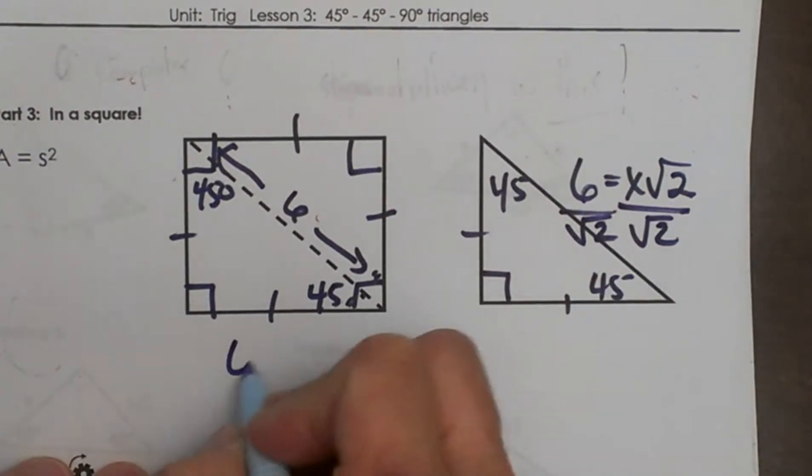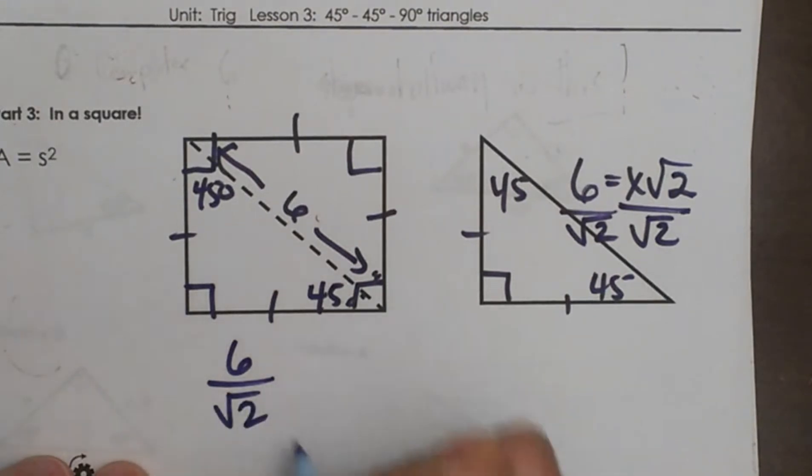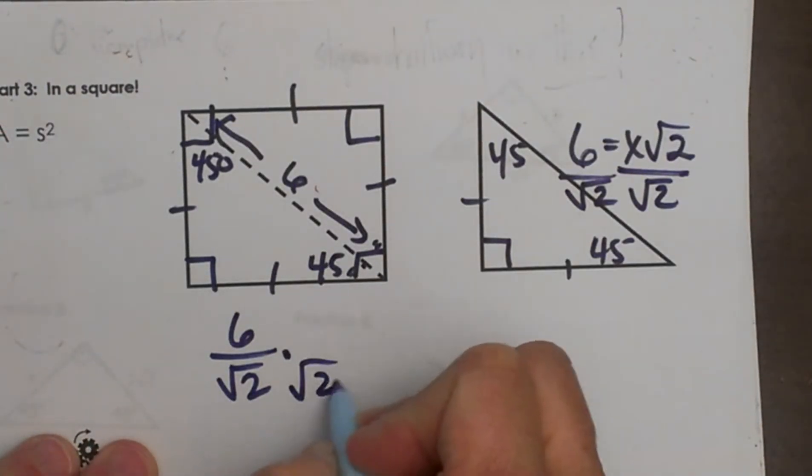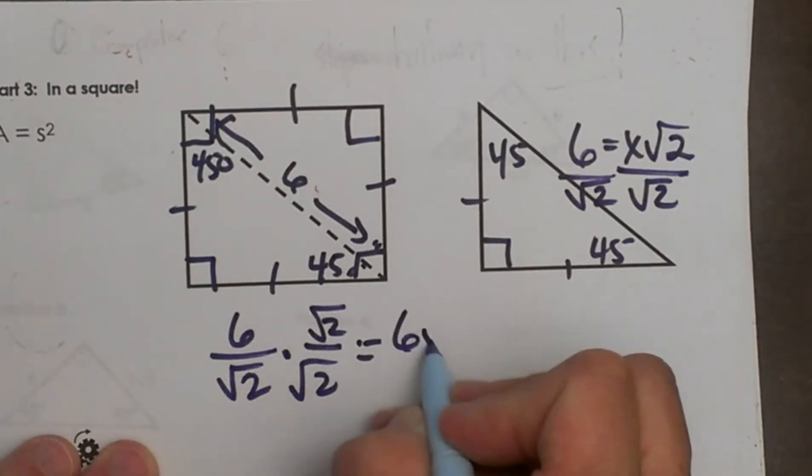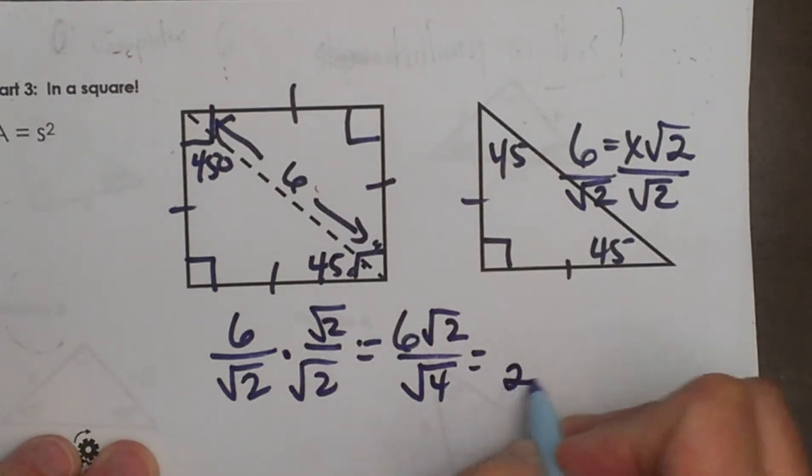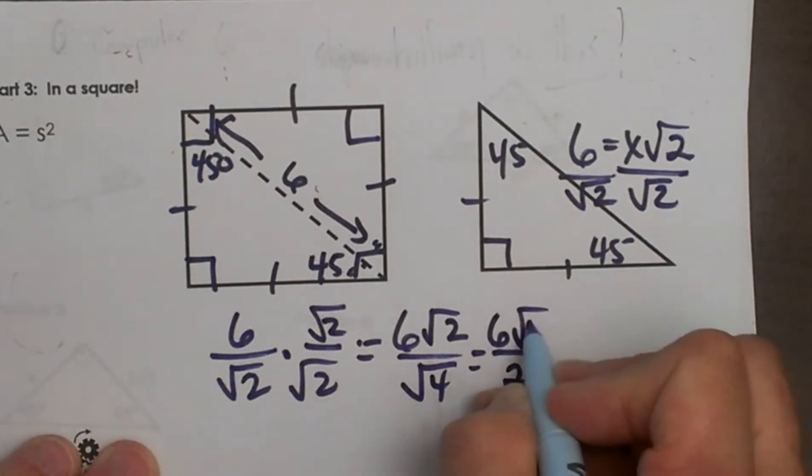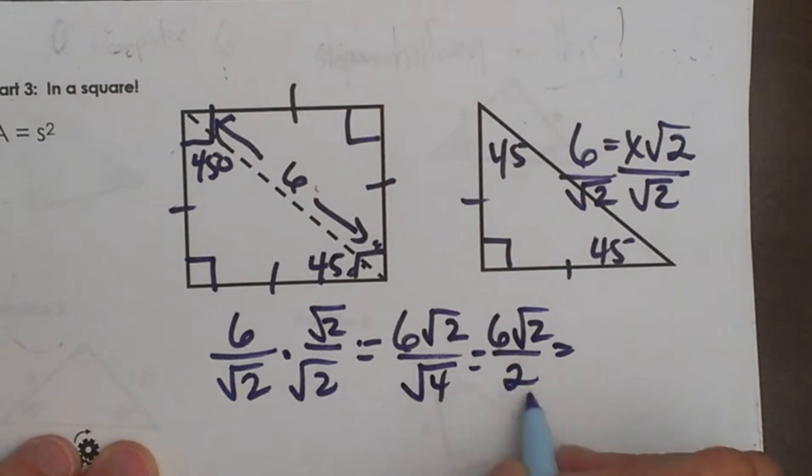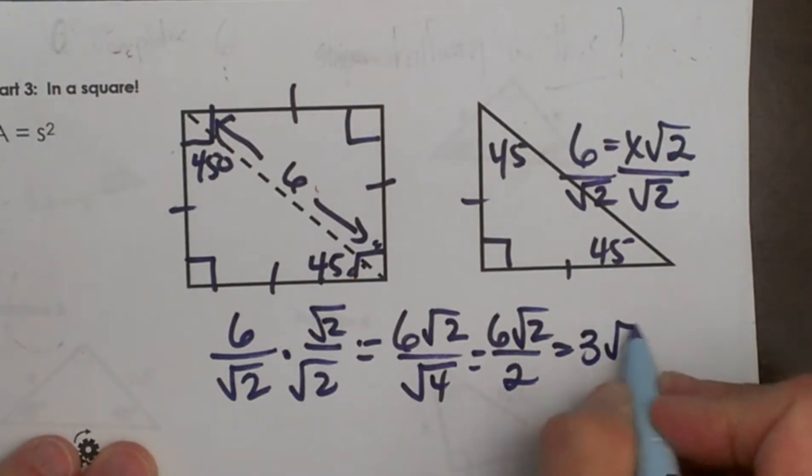So how do we handle dividing that? We have to rationalize the denominator. In other words, multiply by root 2 over root 2, and that gives us 6 root 2 over root 4. And the square root of 4 is 2. So that is 6 root 2 over 2, which again reduces to 3 root 2.